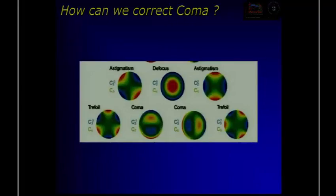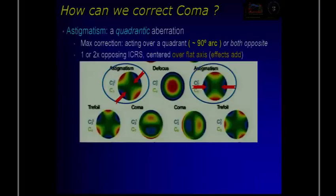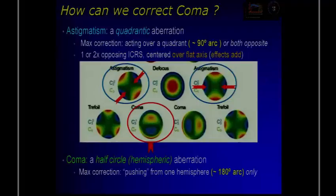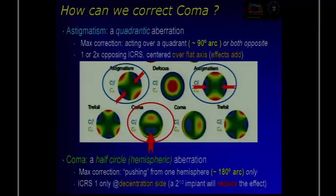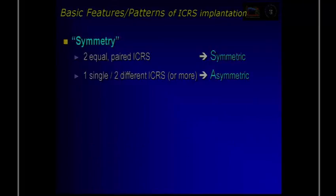How can we correct coma? This is really easy to understand with the Zernike schema. Astigmatism means a quadratic aberration. You see the graph — coma is only half a circle, it's one direction. It is a hemispheric aberration. It is simpler, but it is not necessarily easier in any way. It is not necessarily along the same direction as astigmatism.